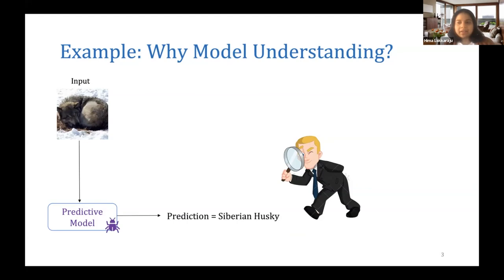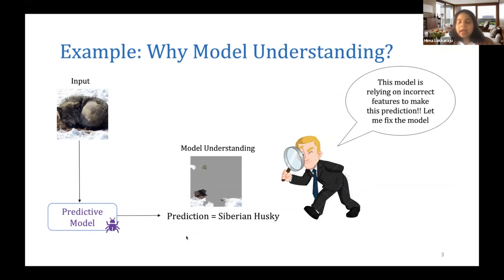In this case, we see an input image of a Siberian Husky and the model is correctly classifying this image as Siberian Husky. So far everything seems great, but if we probe this a bit more deeply and if somehow we were able to see what parts of the image the model is looking at when making this prediction, we might have more insight into if the model is really looking at the right things when making its predictions.